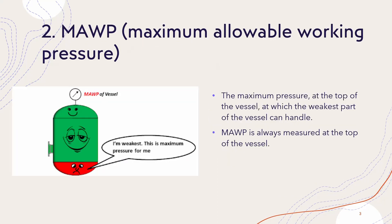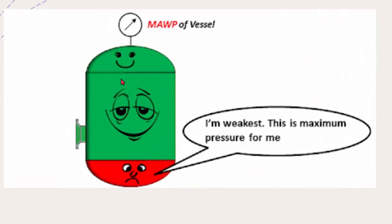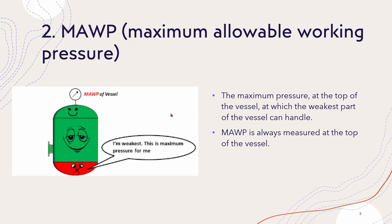Now if we talk about MAWP, that stands for Maximum Allowable Working Pressure. You can see the vessel diagram here — on the top of the vessel we can fix a pressure gauge to measure the vessel pressure. MAWP is the maximum pressure at the top of the vessel at which the weakest part of the vessel can operate, and MAWP is always measured at the top of the vessel.